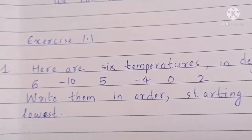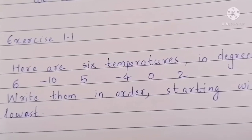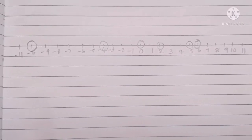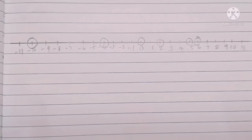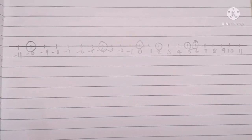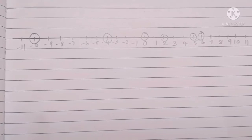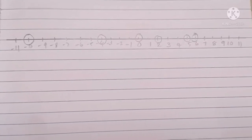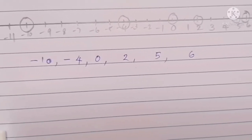From this question we have to arrange these temperatures in ascending order. You can use a number line if you need to. Draw a number line and mark the 6 temperatures on it. The order from lowest is: minus 10, minus 4, 0, 2, 5, 6.